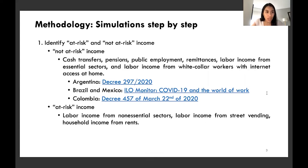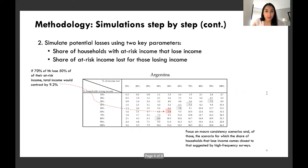The first step of our microsimulation is to identify at-risk and not-at-risk income. Not-at-risk income is defined as income from cash transfers, pensions, public employment, remittances, labor income from essential sectors, and labor income from white-collar workers with internet access at home. At-risk income comes from non-essential sectors, labor income from street vending, and household income from rents.